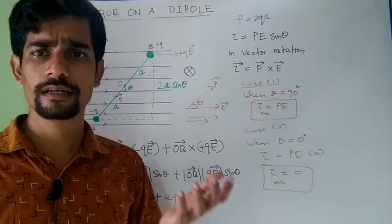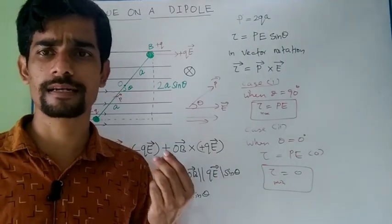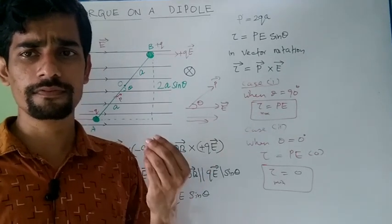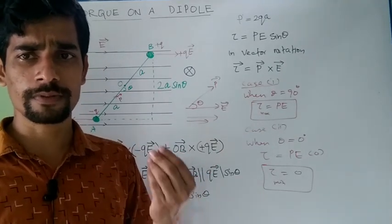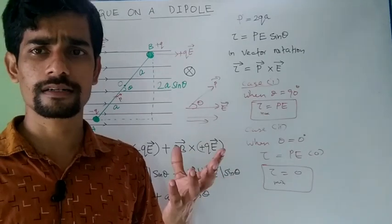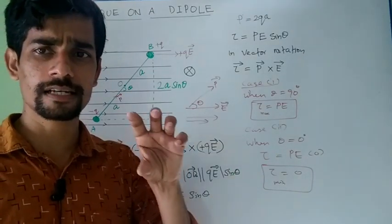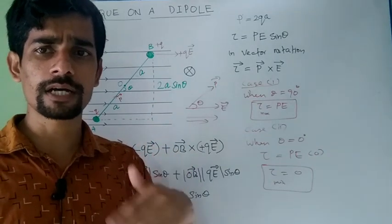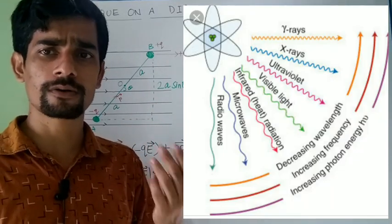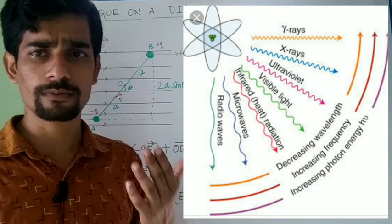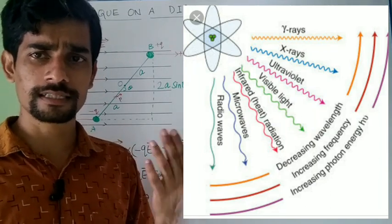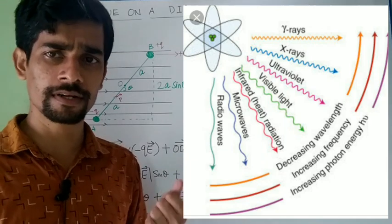We have discussed the case of dipole and water is an example for such dipole. So the water droplets present in our food particles are dipoles, and microwaves are produced there. We know microwaves are electromagnetic waves and they possess electric field and also magnetic field.